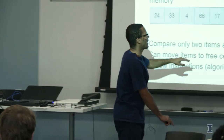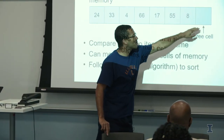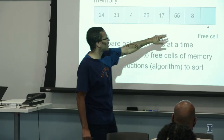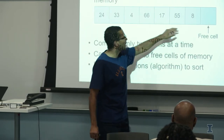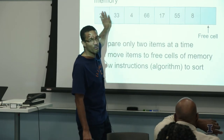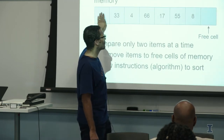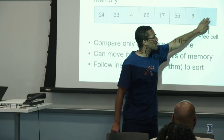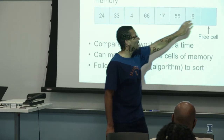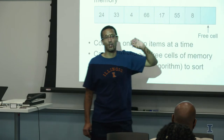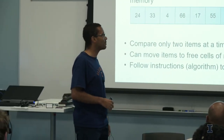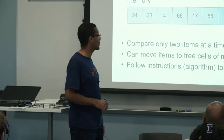Typically what we would have is free spaces in the memory, and we have our list of numbers. If we want to move the number 8 to the beginning, we can't just move the 8 to where 24 is. We have to first save this information by moving 24 to the free cell, copying 8 to the first position, and then moving 24 to where 8 was. So in order to sort, we actually need a little bit of free space to be able to move the data around.